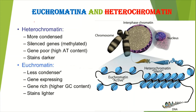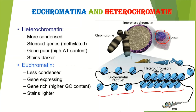These chromatin fibers, on the basis of coiling or super coiling, can be classified into two categories: euchromatins and heterochromatins. In the nucleus, some regions of chromatin are loosely packed during coiling, while some regions are densely packed. As you can see in this image, some regions are densely packed and others are loosely packed. The loosely packed regions are called euchromatin and the densely packed regions are called heterochromatin.